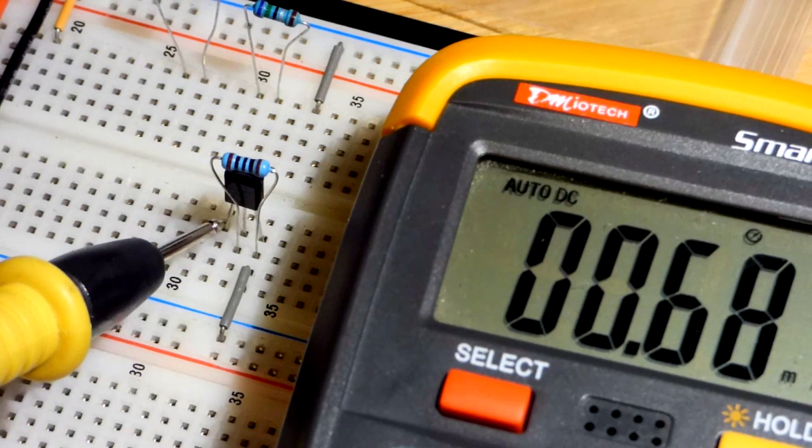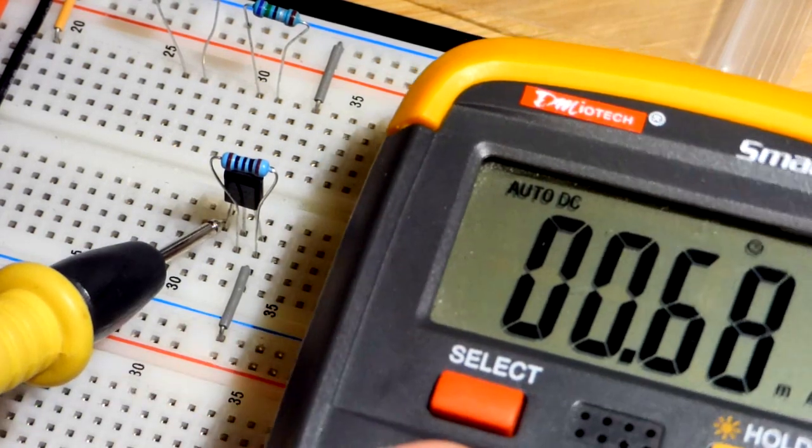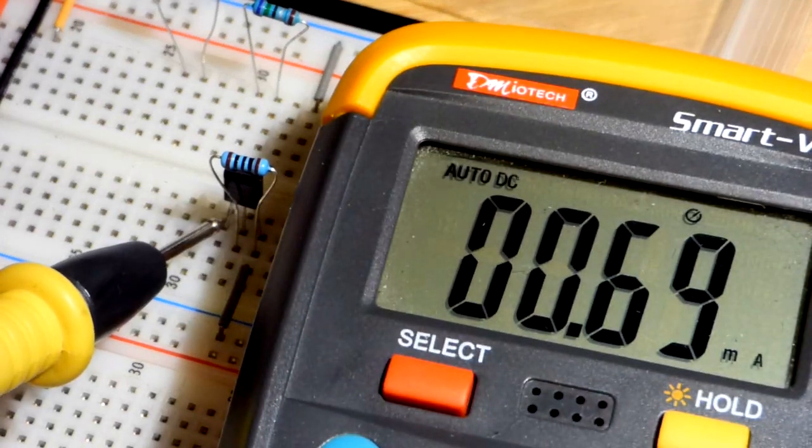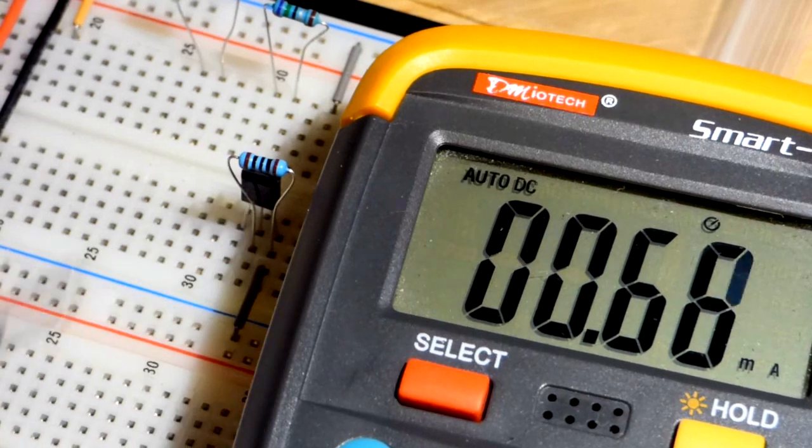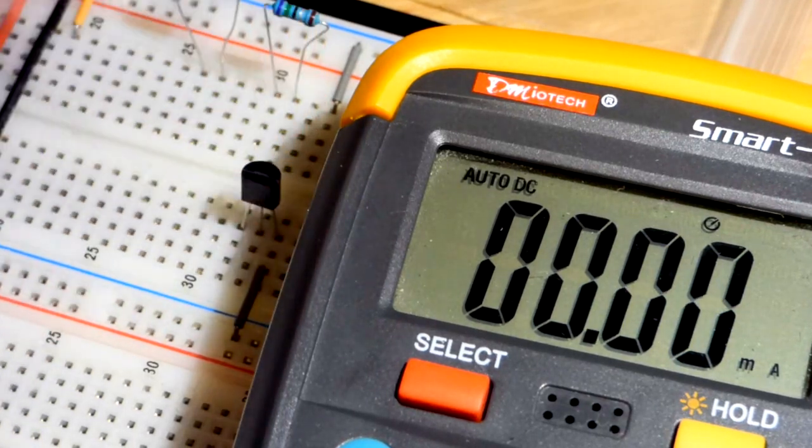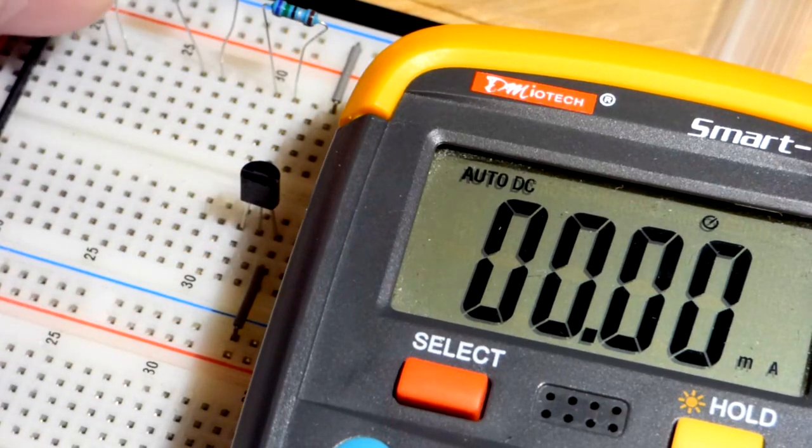So positive rail to the V plus pin. And we have about 68, 69 milliamps of current right there. So that's with a 100 ohm resistor. And that's the current it's leading through.